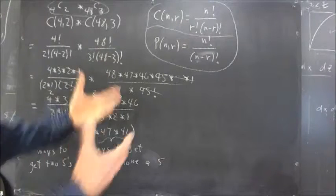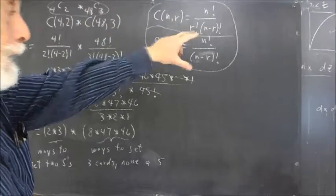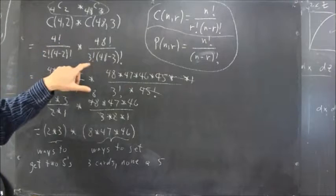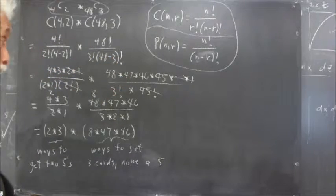Similarly, using the same formula, now n is 48 and r is 3. We just plug the n in where the n goes, plug the r in where the r goes, and we get 48 factorial over 3 factorial times 48 minus 3 factorial.